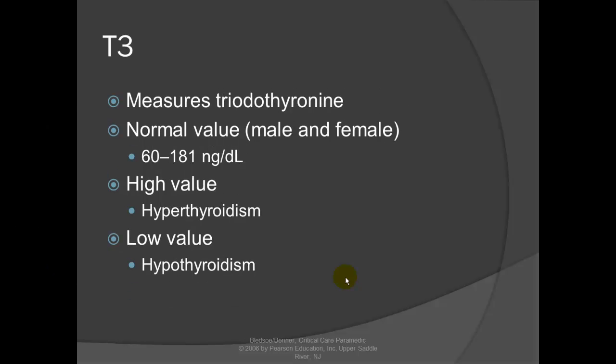T3 measures triiodothyronine, one of our thyroid hormones. Normal value is 60 to 181. A high value indicates hyperthyroidism — too much of this hormone. A low value indicates hypothyroidism.